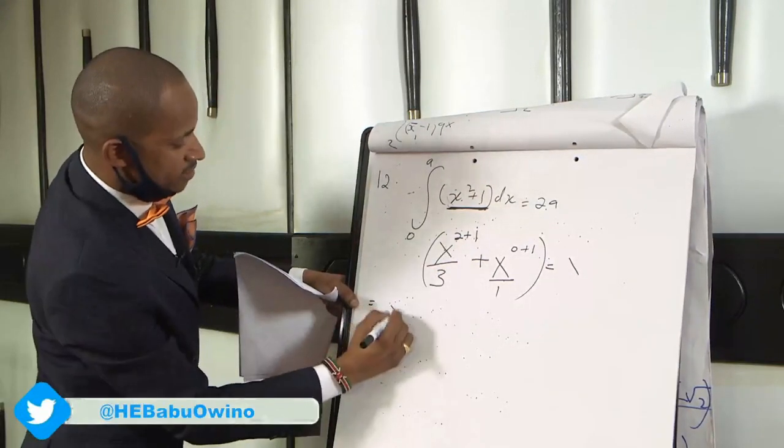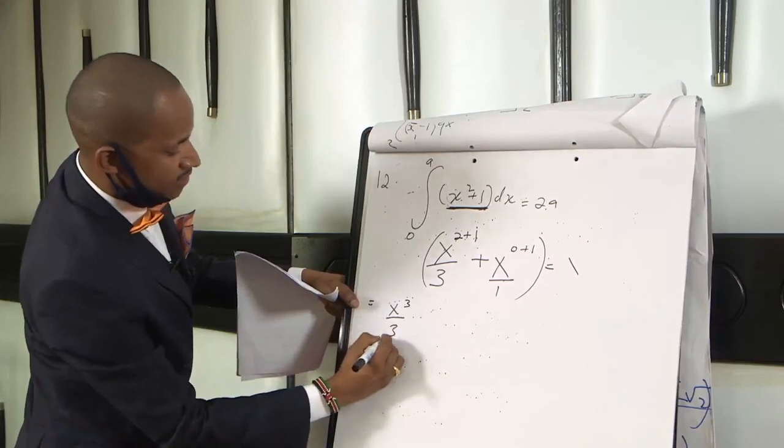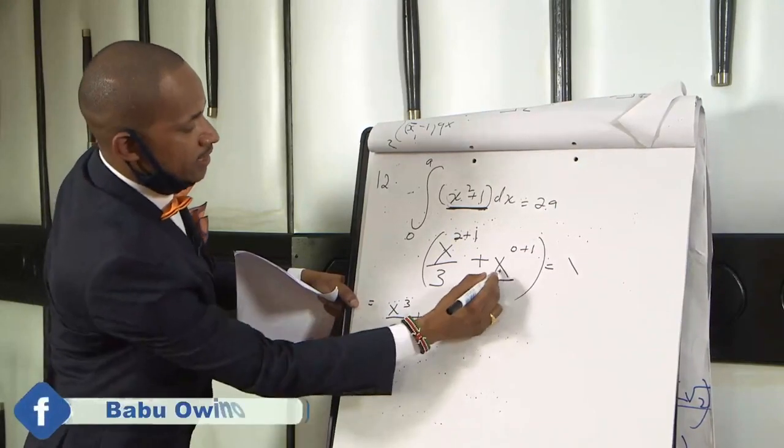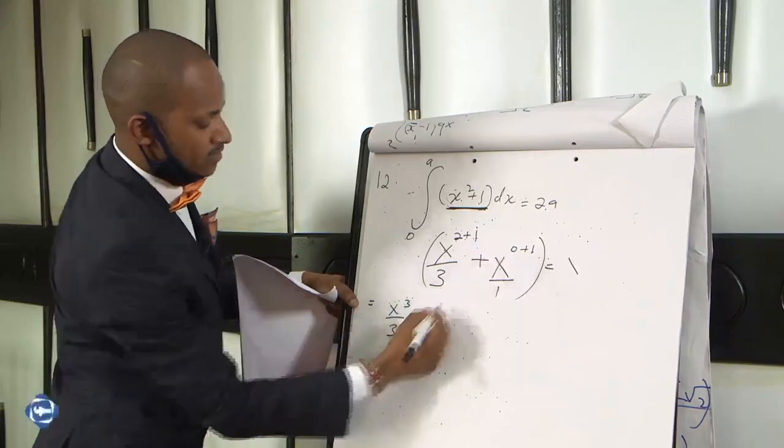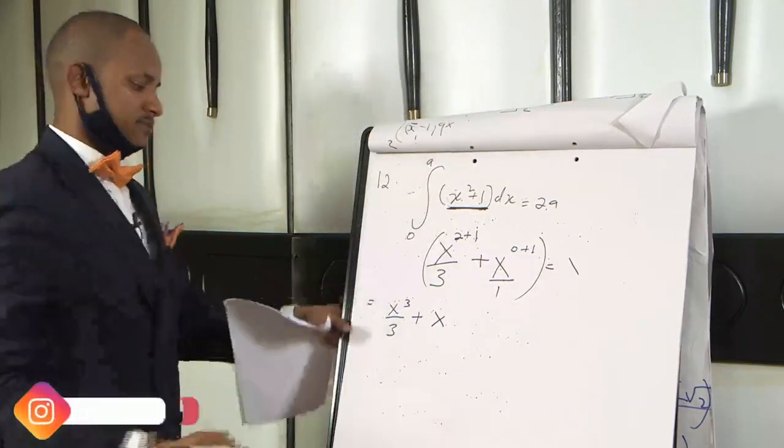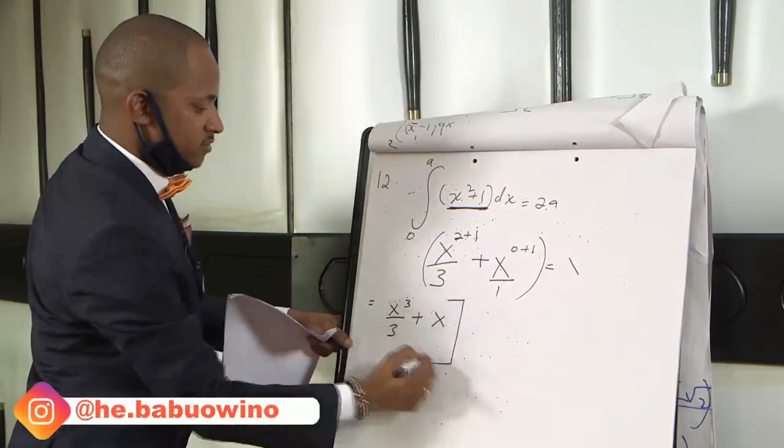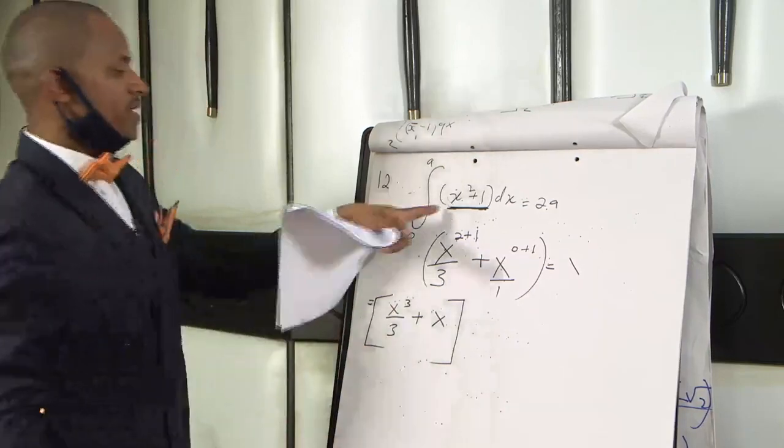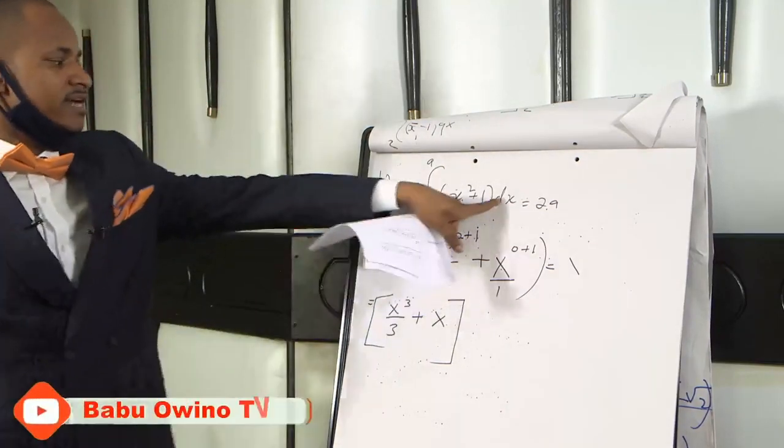What do we get here? This is x cubed divided by 3 plus x raised to power 1. 0 plus 1 is 1. x raised to power 1 is just x. So these values after opening, after integrating, you don't write the dx.